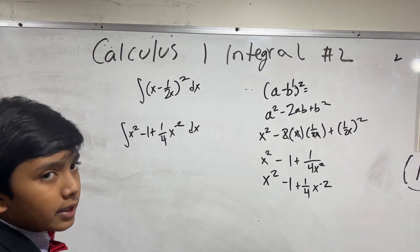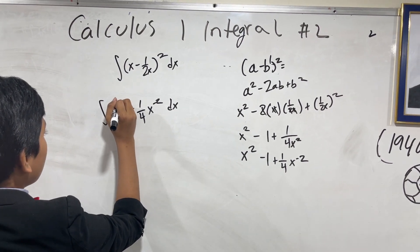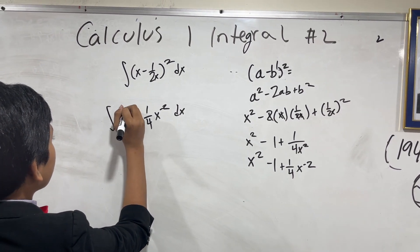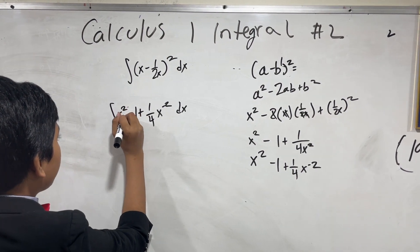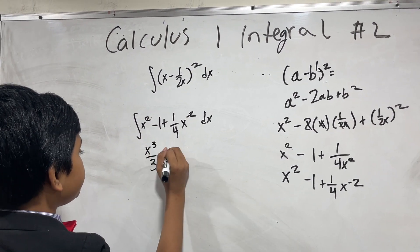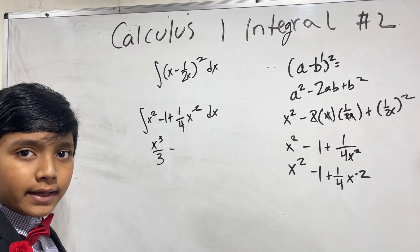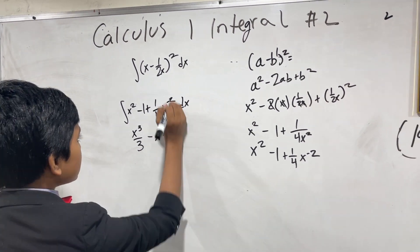When taking the integral, we now know our simple rules. First of all, the inverse power rule for x squared. You add 1, divide by 2 plus 1, so you get x cubed over 3. Minus, whenever you have a constant and you're integrating it, you tack an x on the end.